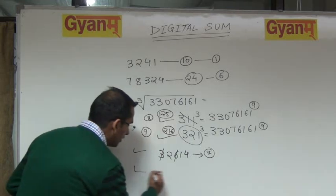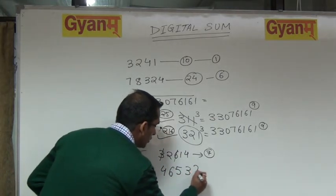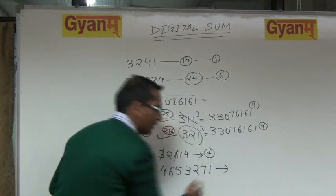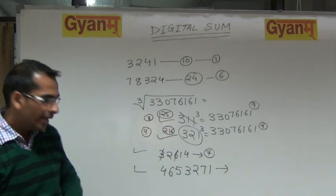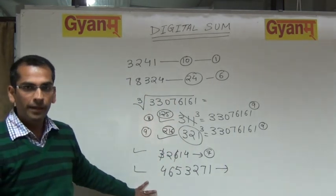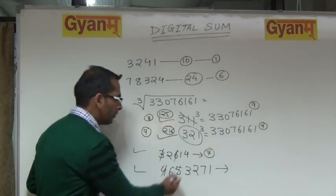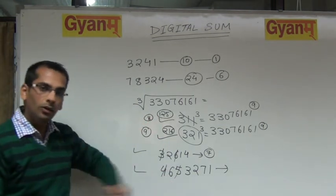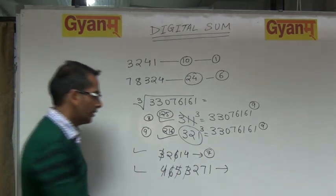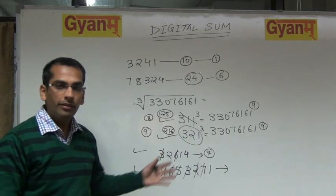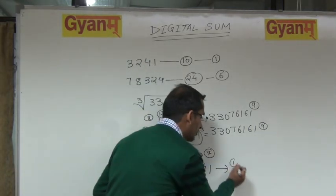Let us take another example: 4, 6, 5, 3, 2, 7, 1. Let us find the digital sum of this number. Can you see any 9? No. Can you see 9 indirectly? Yes. 4 plus 5? 9 — ignore it. 6 plus 3? 9 — ignore it. 2 plus 7? 9 — ignore it. We are left with 1. So 1 is the digital sum of this number.